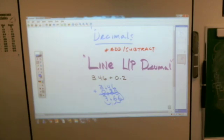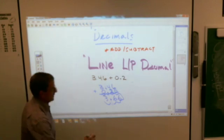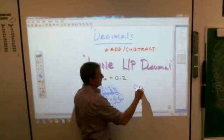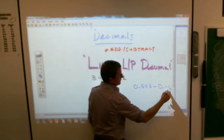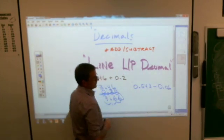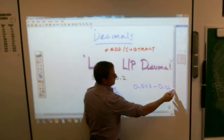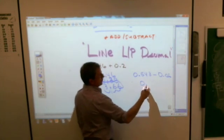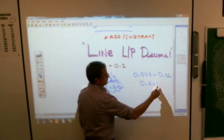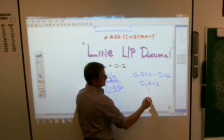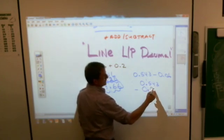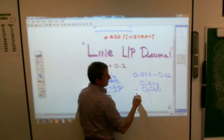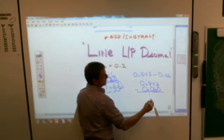Same thing with subtracting decimals. If you have something like this, 0.543 minus 0.06. If you're writing that out, it would be 0.543 on this decimal point. You have to line up this, 0.06, and again, you can add zeros if you like. In your answer, the decimal goes on that.